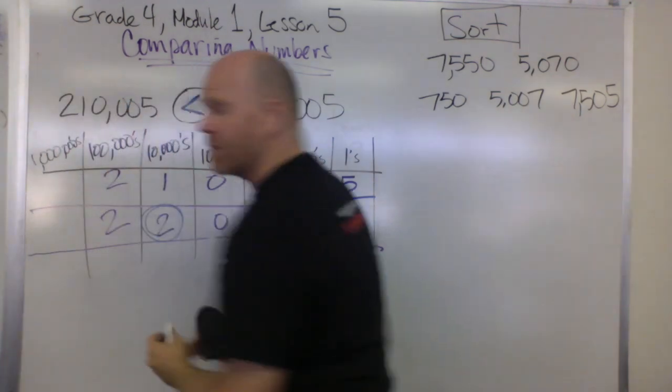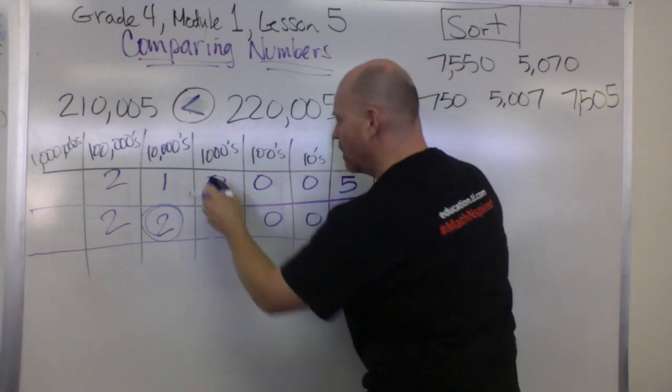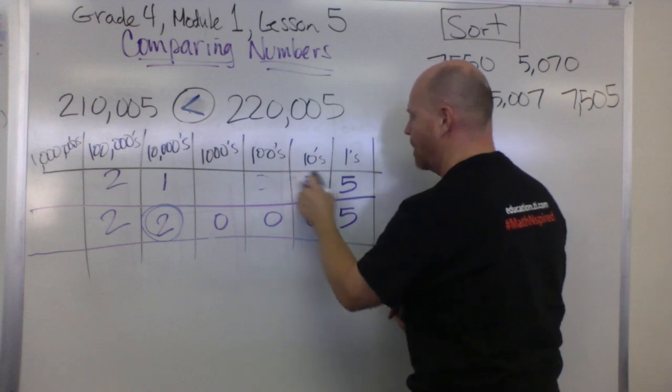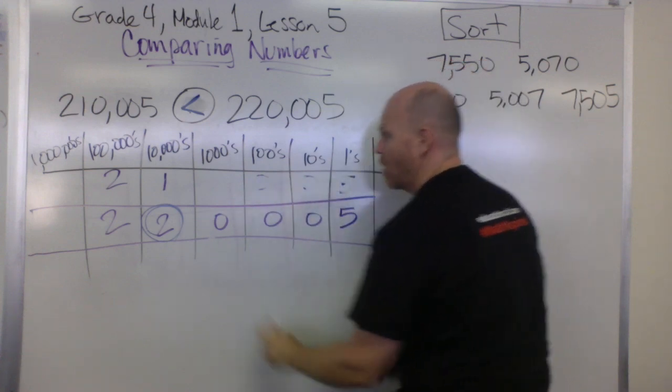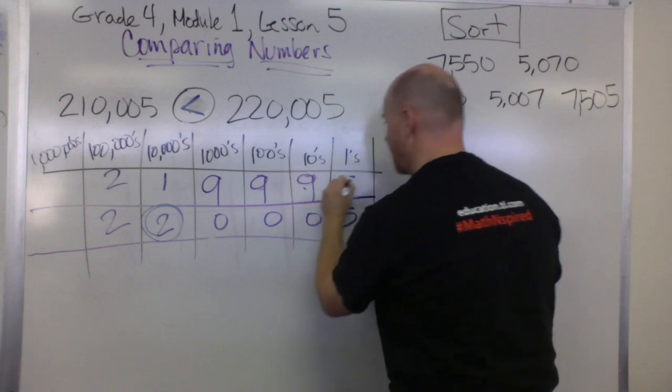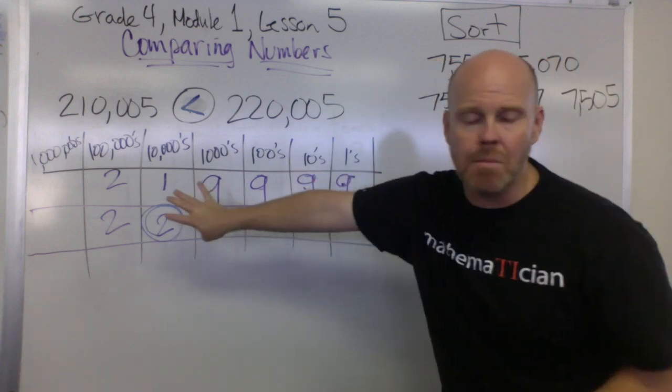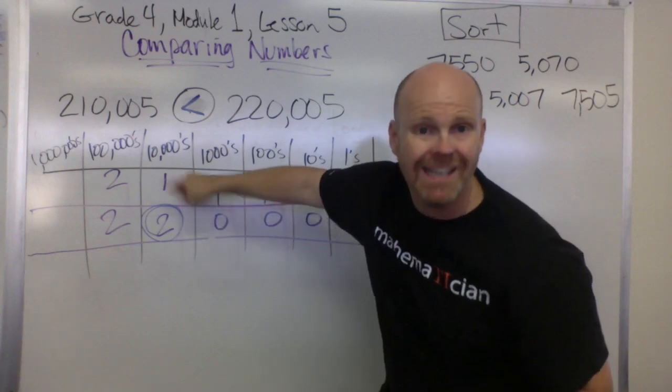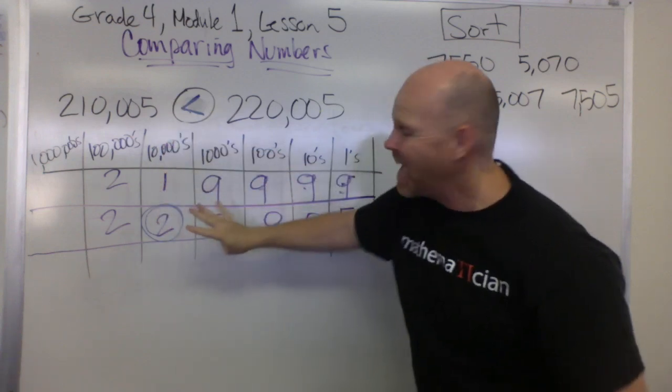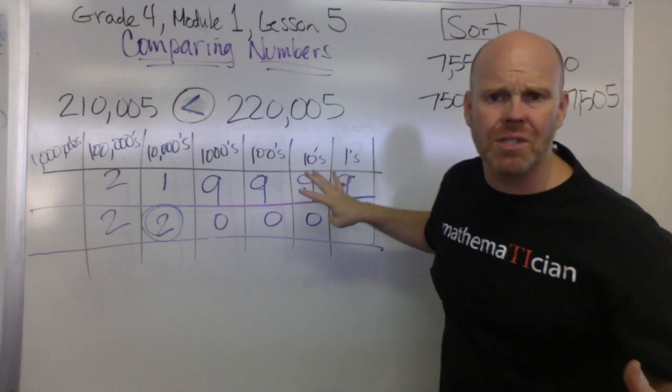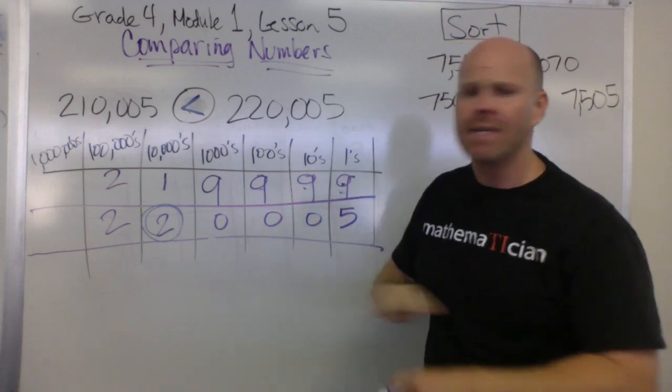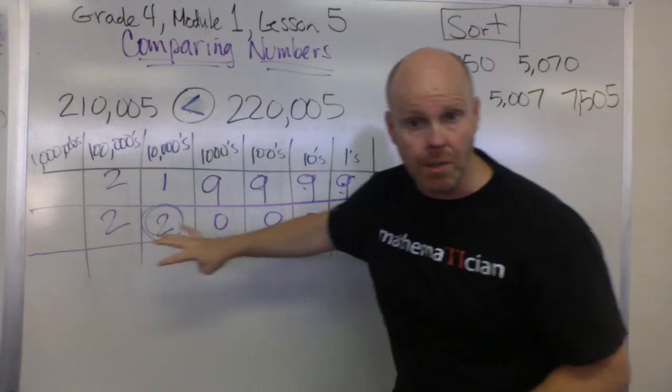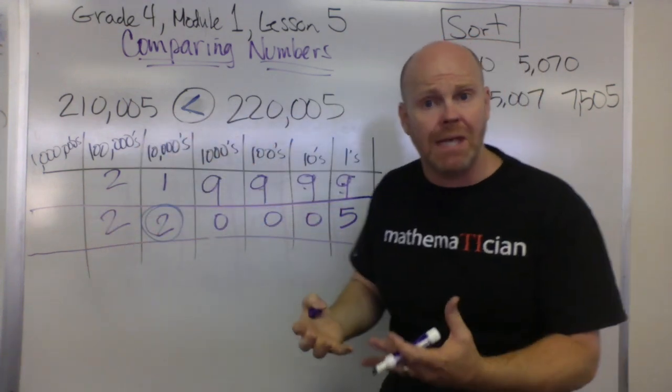In fact, here's a crazy thing: if we wanted to, we could change all of these numbers after the one here, we could change every single one to a nine—9, 9, 9, 9—and it doesn't matter. Because once this two beats the one in the ten thousands column, everything else just essentially in terms of the comparison doesn't matter. That is how we are going to compare numbers, by thinking of them in the place value chart.